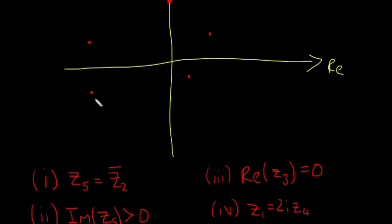So that means this one here, we can say, is Z2, and that this one is Z5. So now we're almost halfway there.